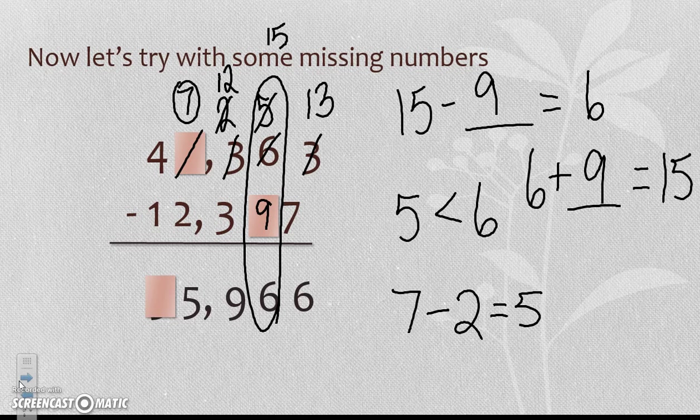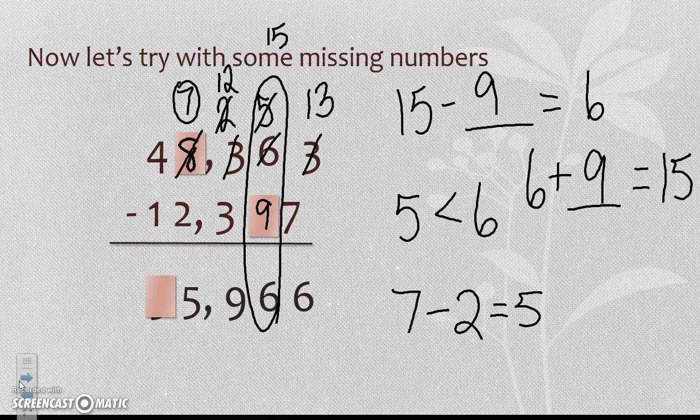Remember, 7 has to be the value that's been regrouped. So the actual number that was original has to be 8, because I regrouped to make the 8 a 7. And then finally, 1 from 4 is 3.